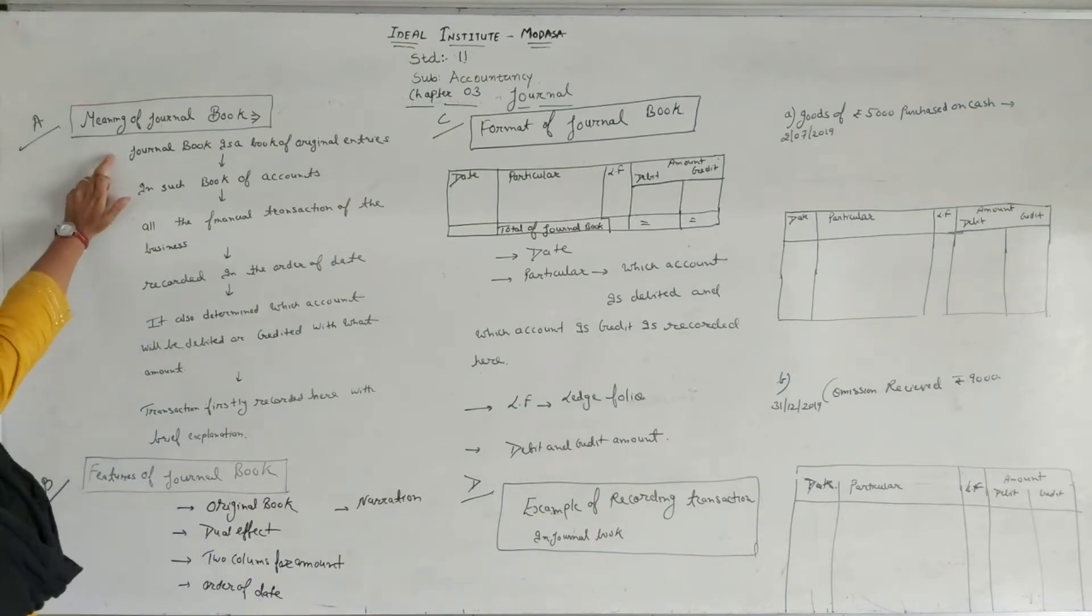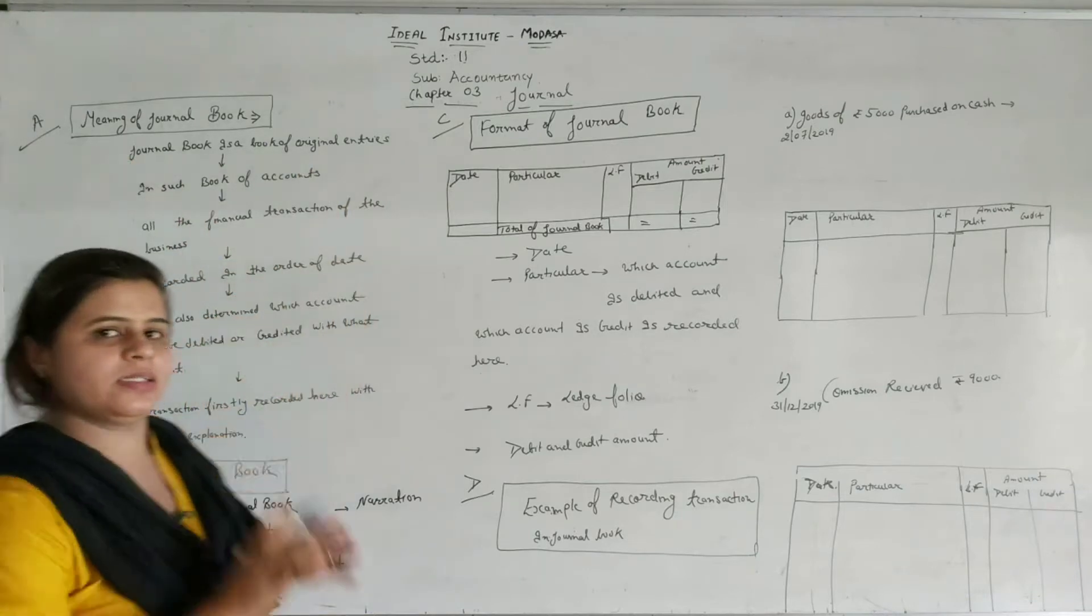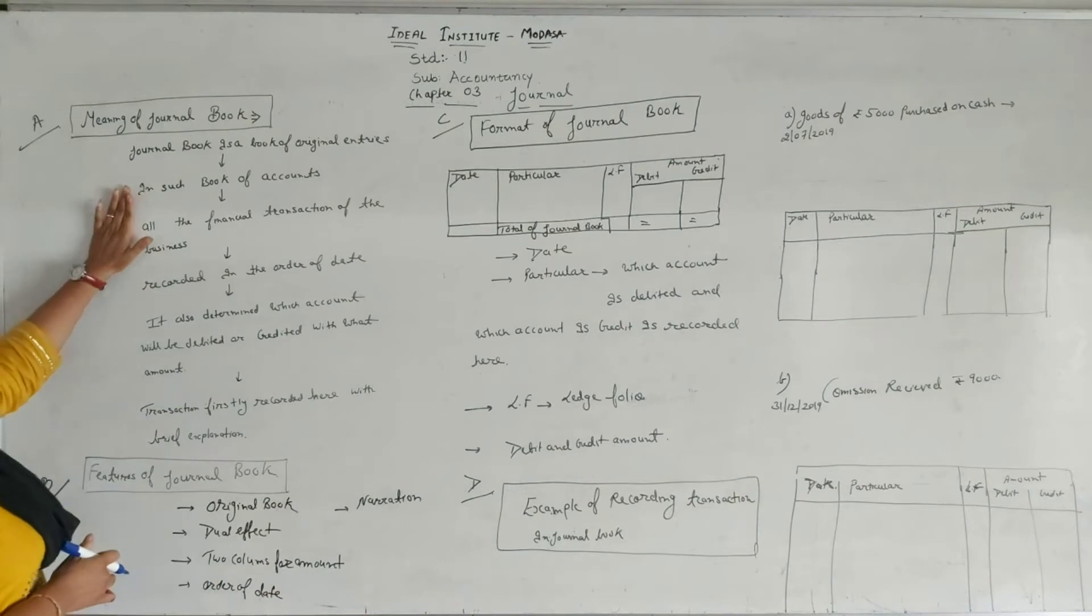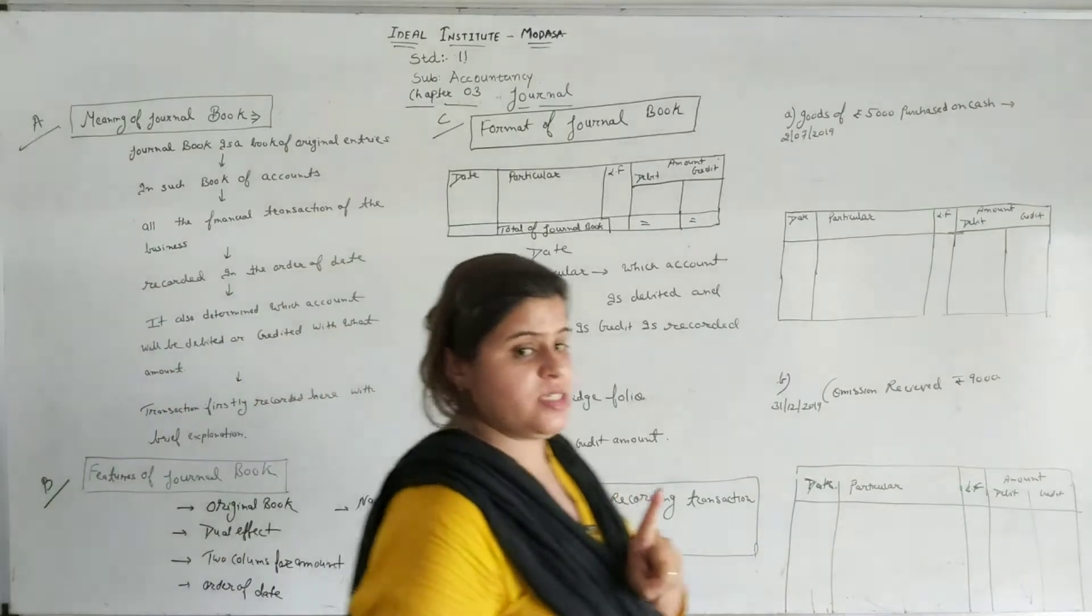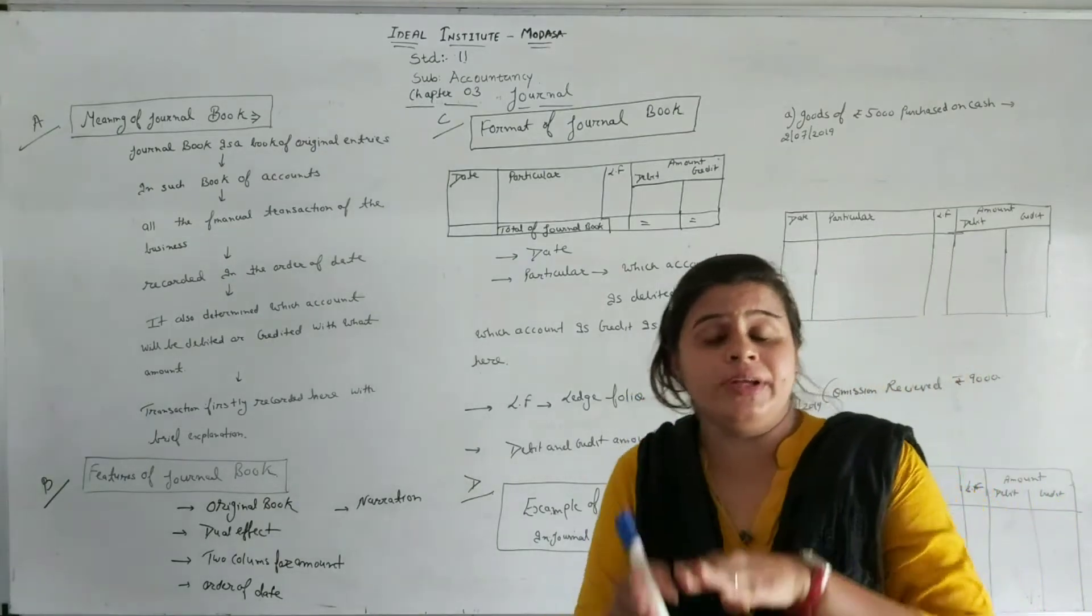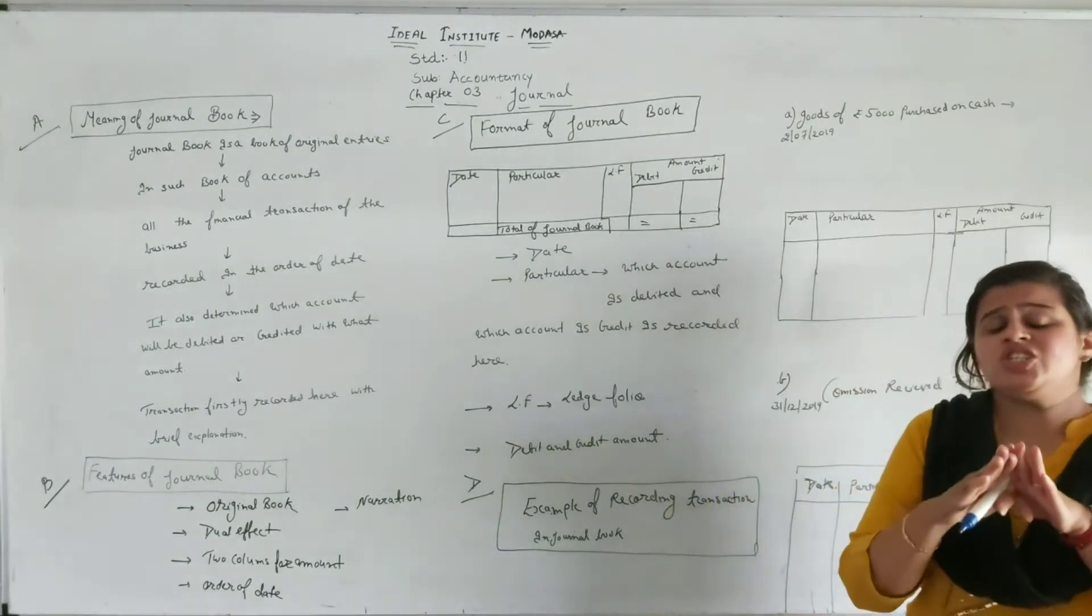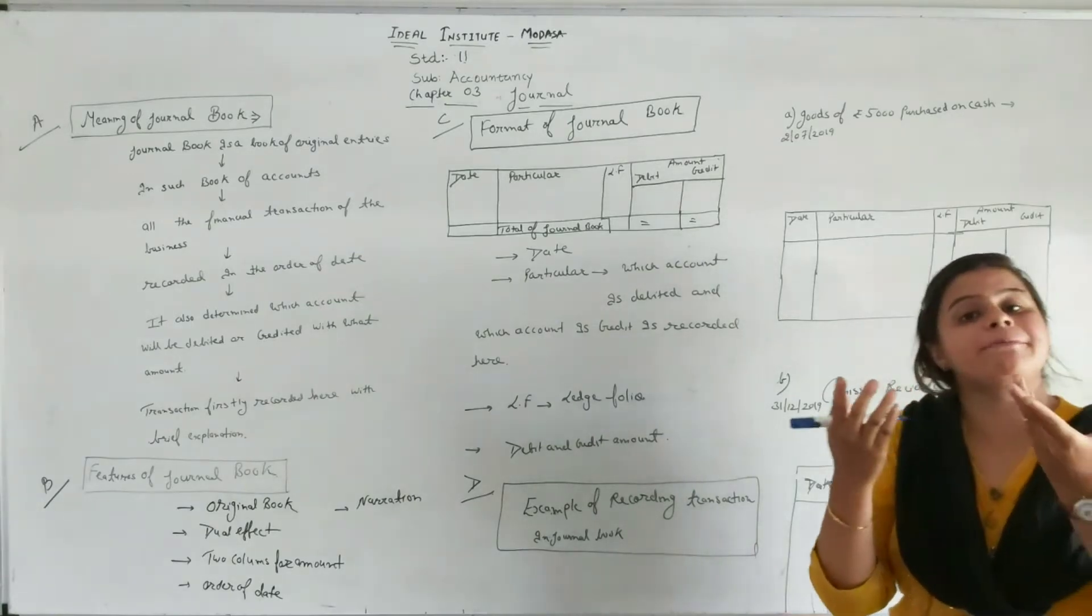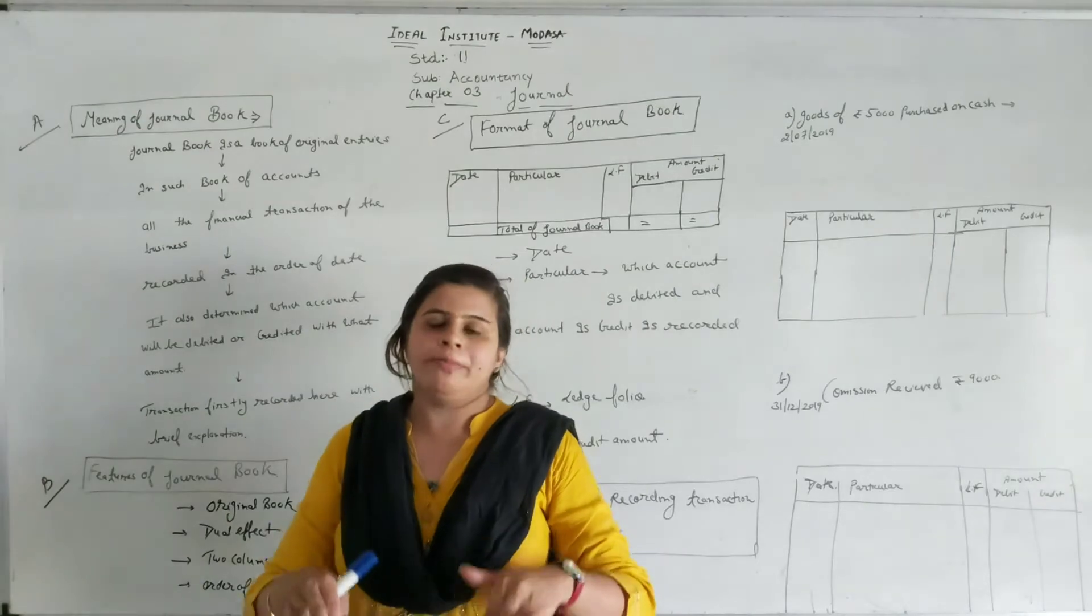Journal book is a book of original entries. In this book of accounts, all the financial transactions of the business are recorded. I am not talking about the non-financial transactions, there is a difference between the financial and non-financial. Financial transactions are those which are measurable in money. And non-financial transactions cannot be recorded in books because we cannot measure them in money. For example, I have made a book sale and collected money. This is a financial transaction.